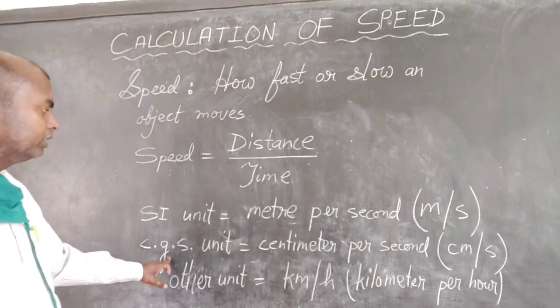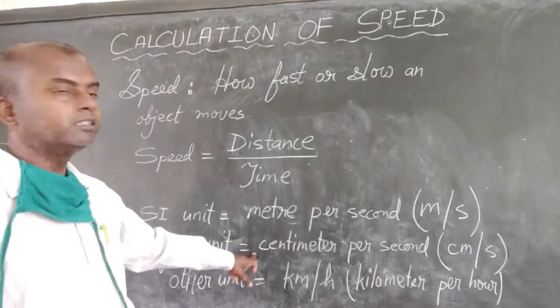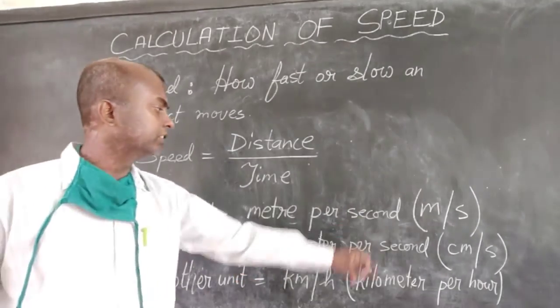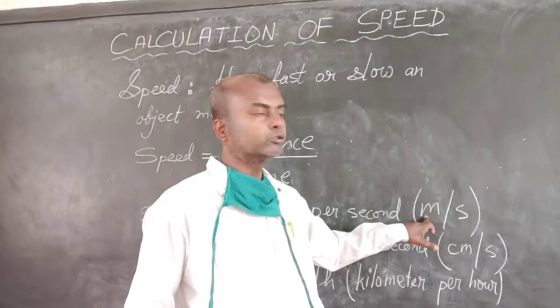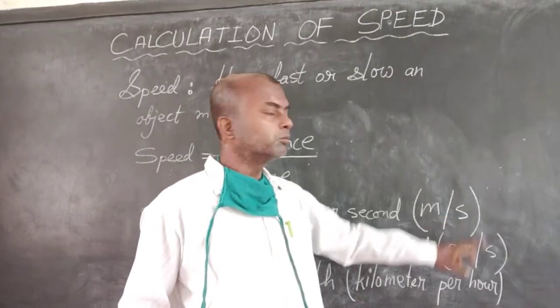Then you have a CGS unit. Instead of meter we have the centimeter. So centimeter per second. Short form of centimeter is cm—small letter c, small letter m. In this case also m is small letter, s is small letter.